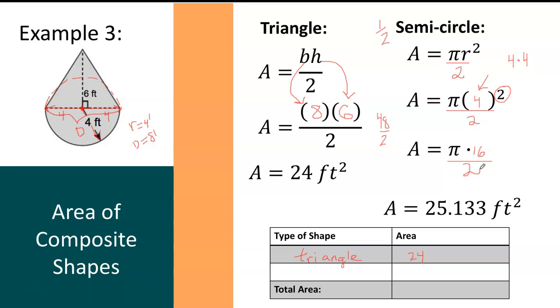Now when I type it into the calculator, pi times 16, enter, and then divide by 2, I actually get 25.13274123 and it keeps going. But I didn't want to record all of that so I rounded to the nearest thousandth place.